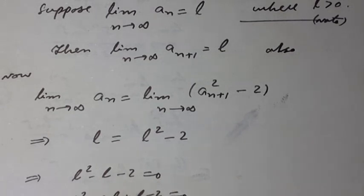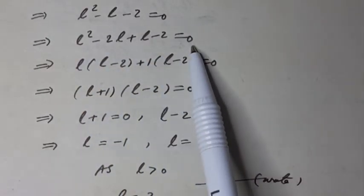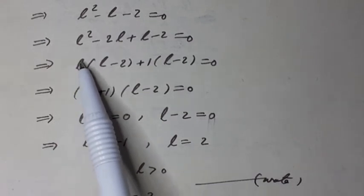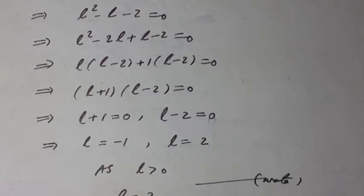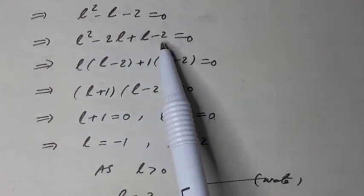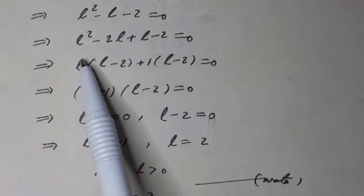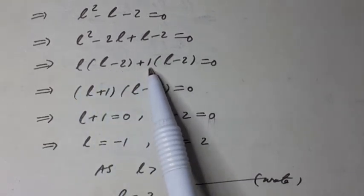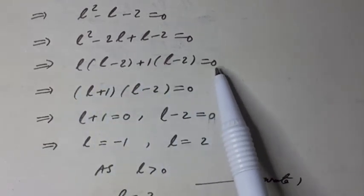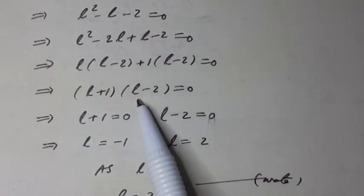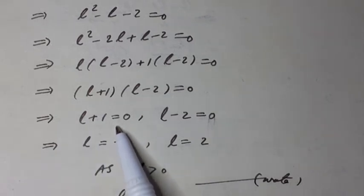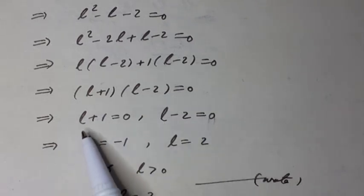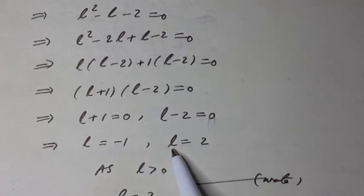This can be written as l² minus 2l plus l minus 2 is equal to 0, which factors as l(l minus 2) plus 1(l minus 2) is equal to 0, giving (l plus 1)(l minus 2) is equal to 0. Therefore l minus 2 is equal to 0, which implies l is equal to minus 1 or l is equal to 2. Since l is greater than 0, we take l is equal to 2.